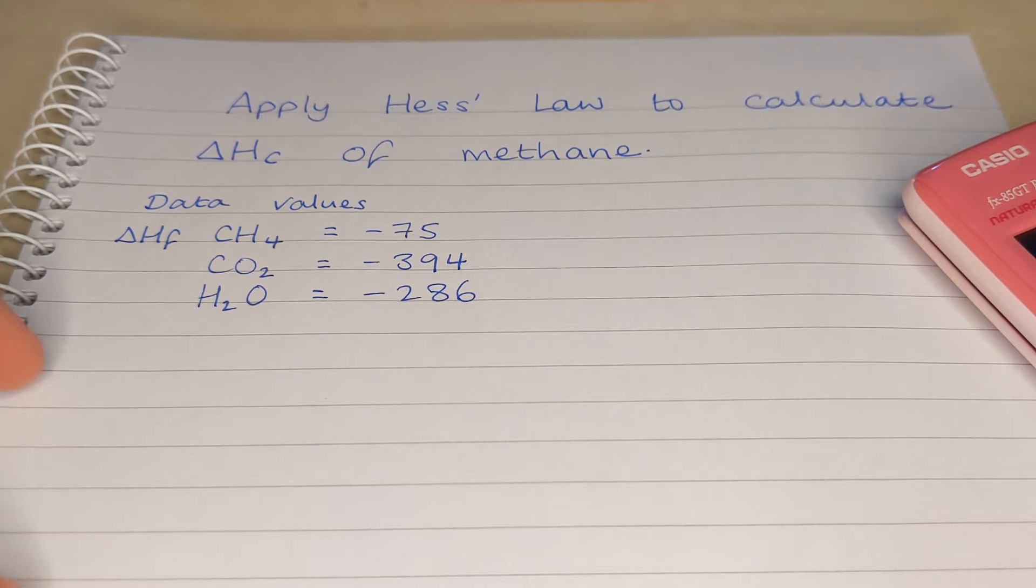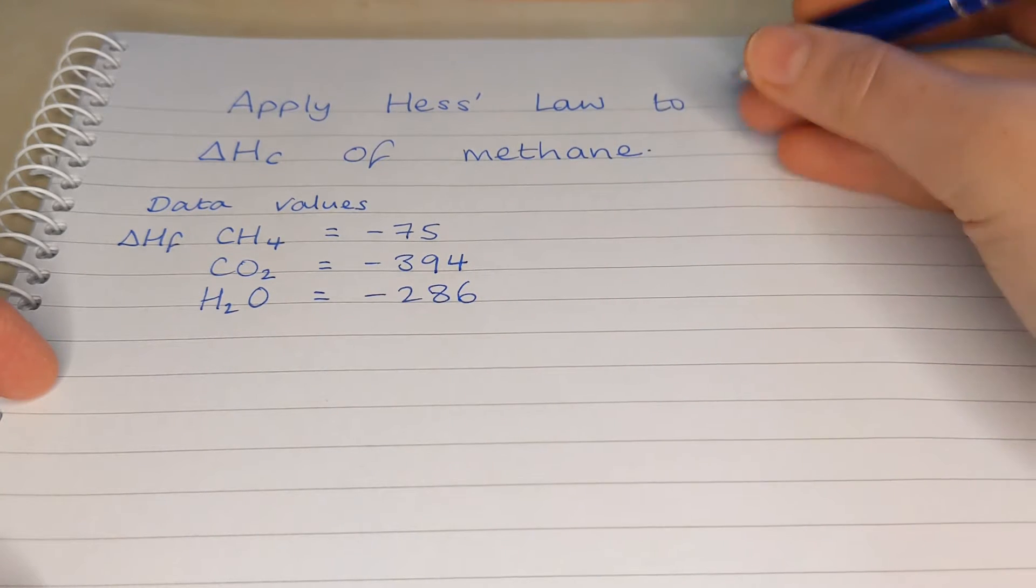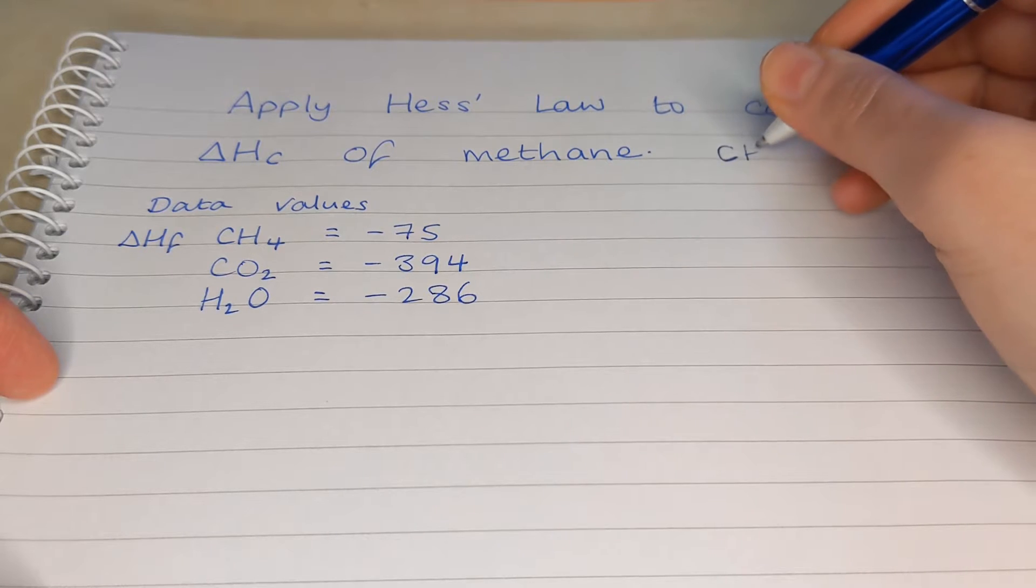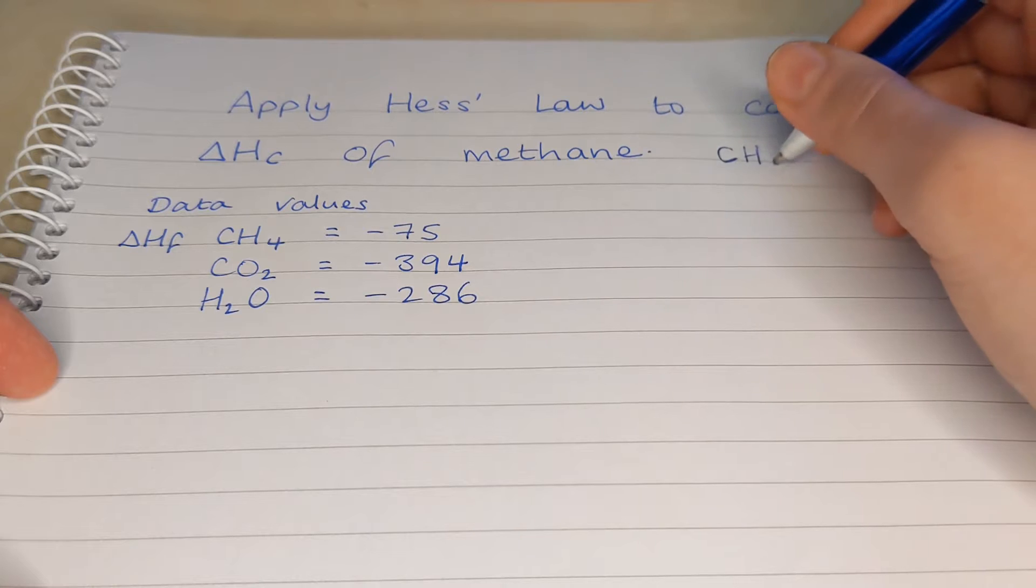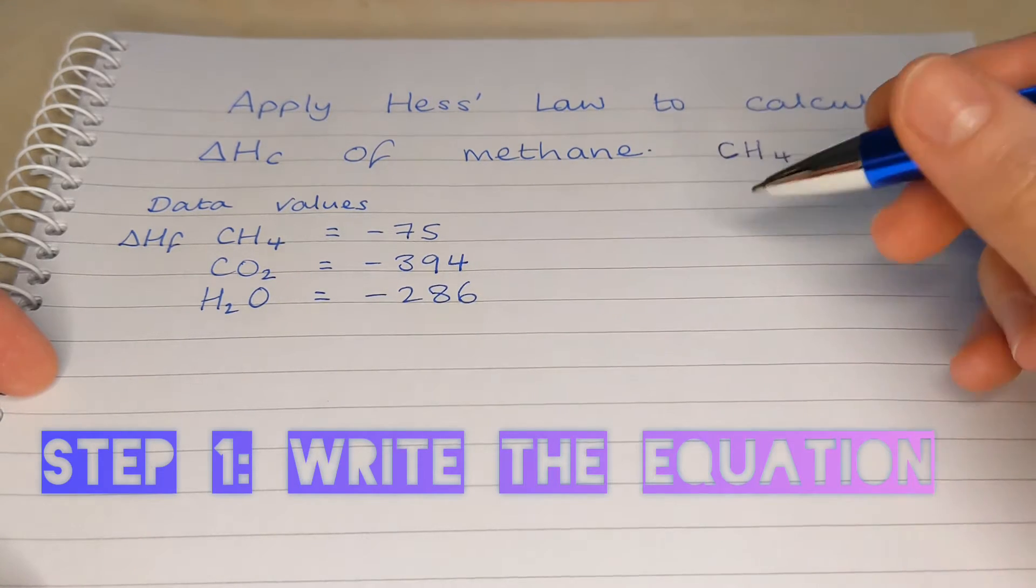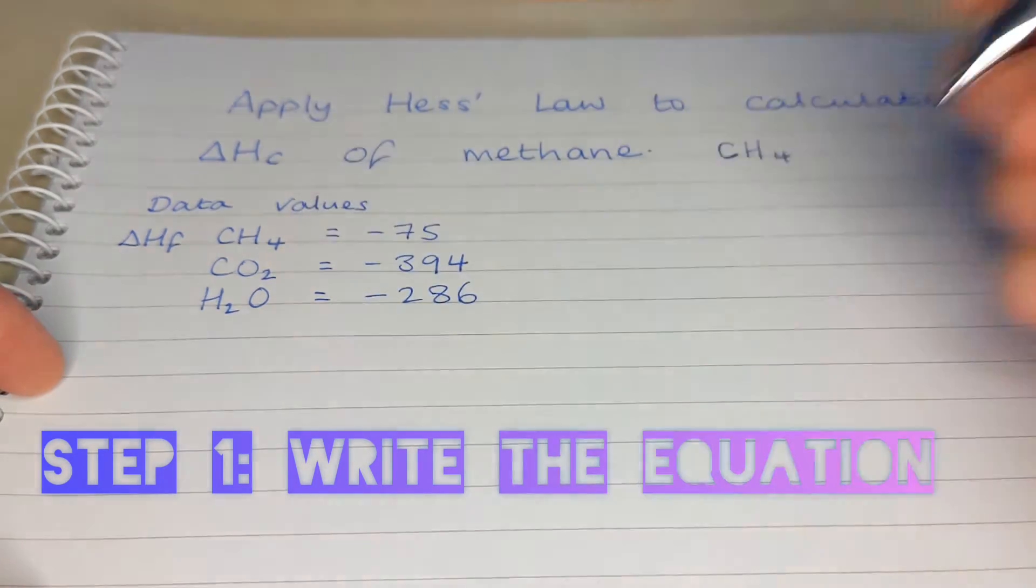First of all we need to know the formula of methane. So meth means one carbon. It's a hydrocarbon so it's got carbon and hydrogens in it. Carbon forms four bonds so CH4 is methane and the first step, the first thing we have to do is write an equation for this reaction.